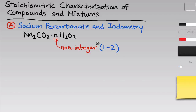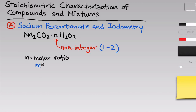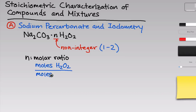Our goal in this part of the experiment is to determine this value of n. The first thing to say about n is that you should consider it as a molar ratio — it's equal to the moles of H2O2 in some sample of the compound divided by the moles of sodium carbonate in that same sample.